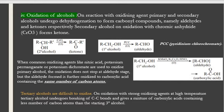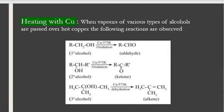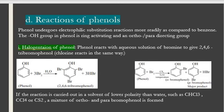Heating with copper: when vapors of various types of alcohols are passed over hot copper at 573 Kelvin, the following reactions are observed. Primary alcohols on oxidation in presence of copper heated at 573K give aldehyde. Secondary alcohols give ketones. Tertiary alcohols give alkenes. These are the products obtained by heating the alcohols with copper at 573 Kelvin.